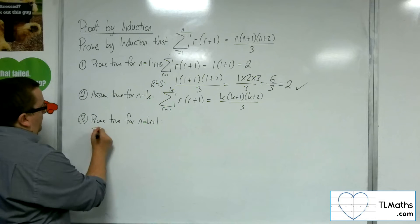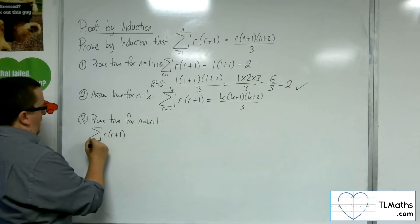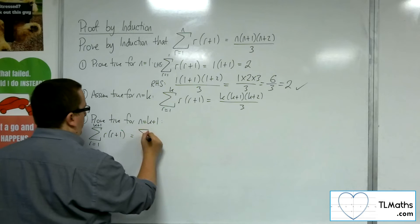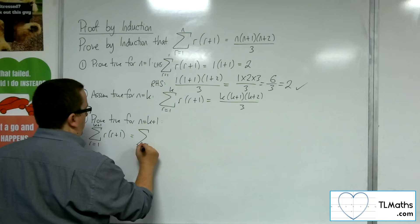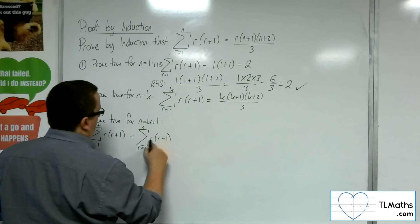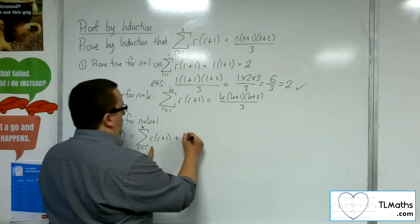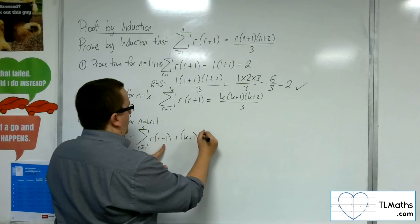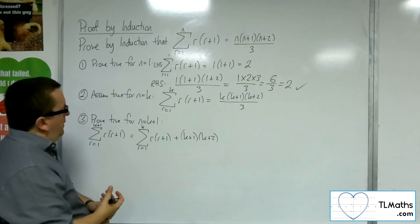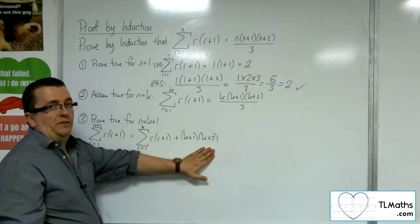So we're going to have the sum of r times r plus 1 from r equals 1 up to k plus 1 is the sum from r is 1 up to k of r times r plus 1, plus substituting in that k plus 1. So k plus 1 times k plus 2. So that's from 1, 2, 3, 4, 5, all the way up to k, and then we've got the k plus 1 term.